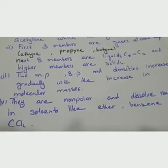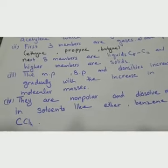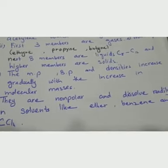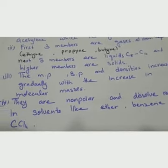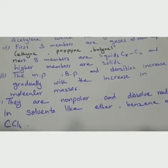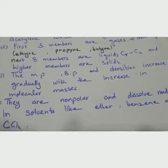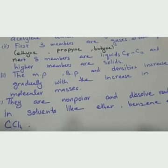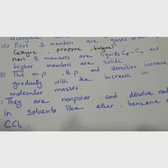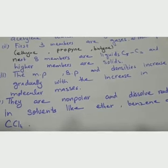Alkynes dissolve readily in non-polar solvents like ether, benzene, and carbon tetrachloride. Since they have no polarity, they are not soluble in water or polar liquids. You know the principle: like dissolves like — non-polar dissolves in non-polar.